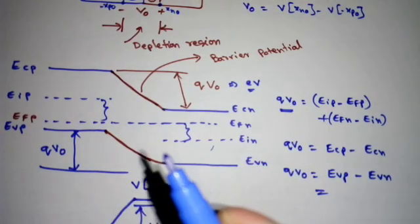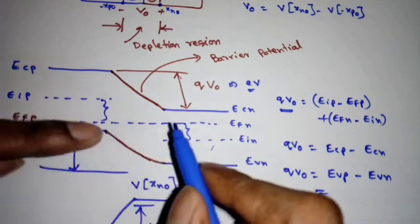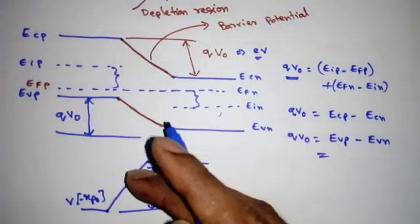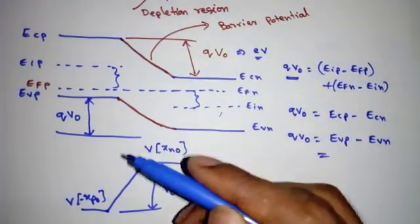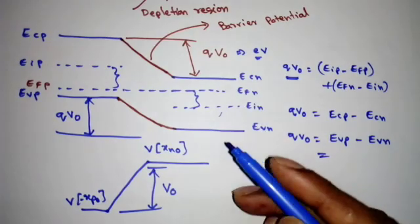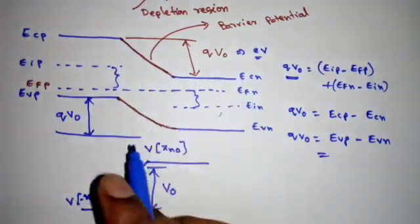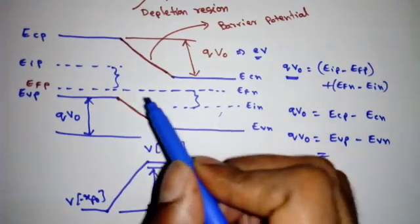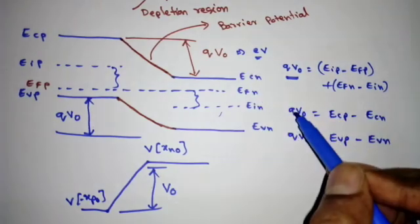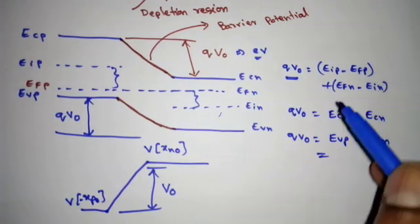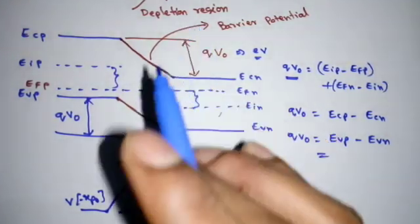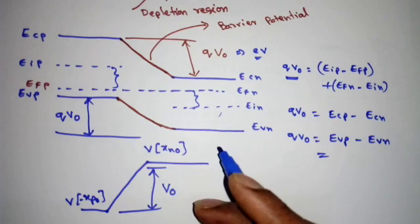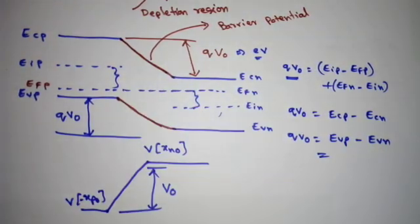At equilibrium, the Fermi level on the p-side must equal the Fermi level on the n-side. In GATE exams, questions based on energy band diagrams may ask for the barrier potential, which can be found using Ecp - Ecn, Evp - Evn, or Eip - Efp + Efn - Ein. In the next lecture, we will study the p-n junction under forward bias condition.